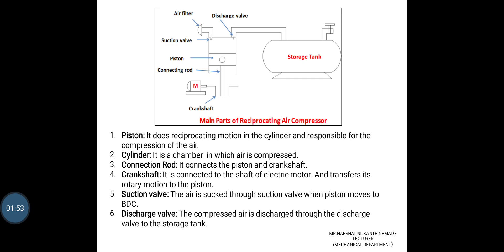Crankshaft: It connects the shaft of the electric motor and transfers the rotary motion into the piston's reciprocating motion. Suction Valve: The air is sucked through the suction valve when the piston moves to the BDC. Discharge Valve: The compressed air is discharged through the discharge valve to storage in the tank.